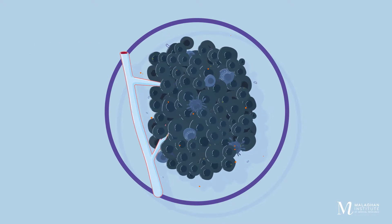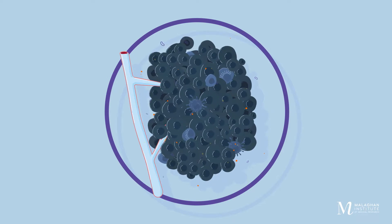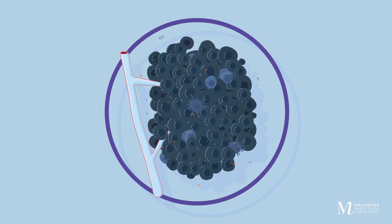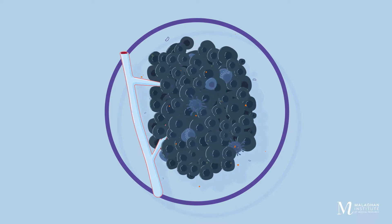Which cells slow down the immune response? Which attack the tumour? How can we make the immune system more efficient?